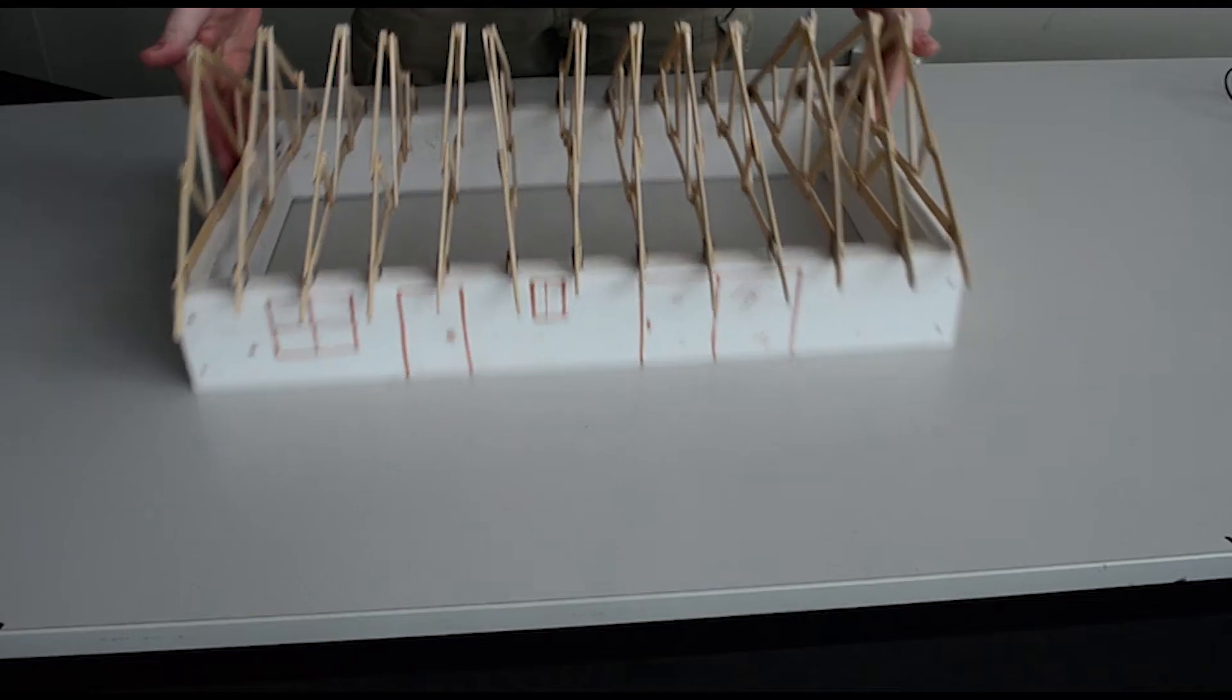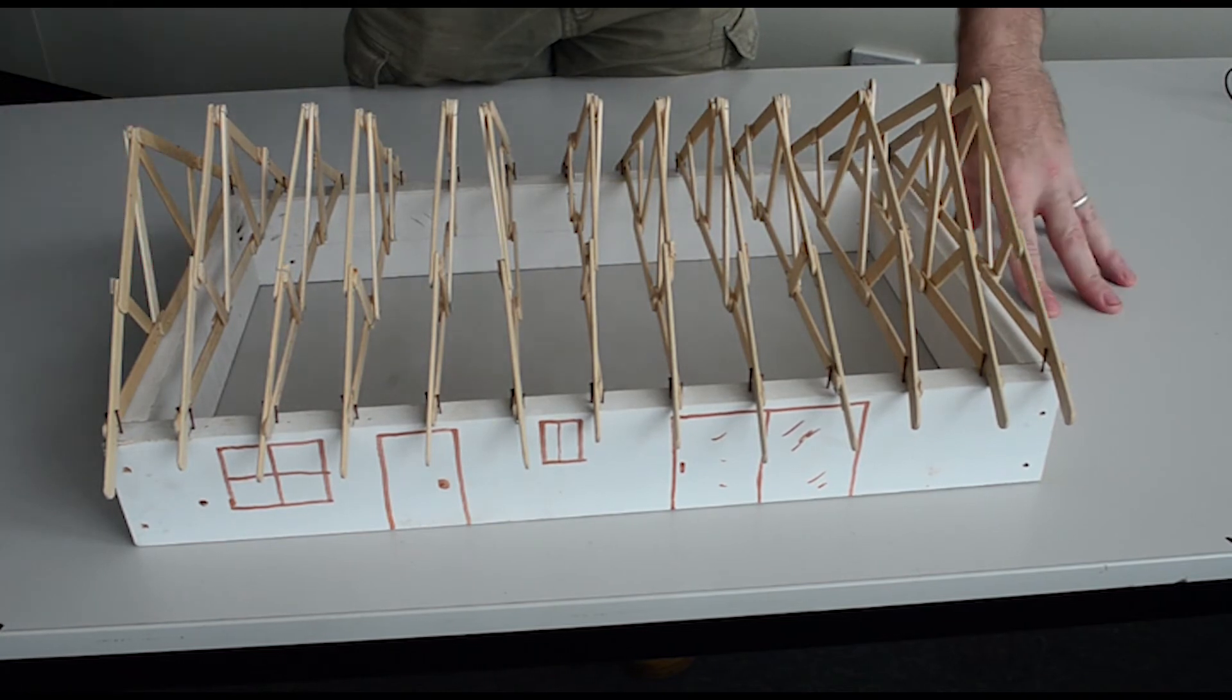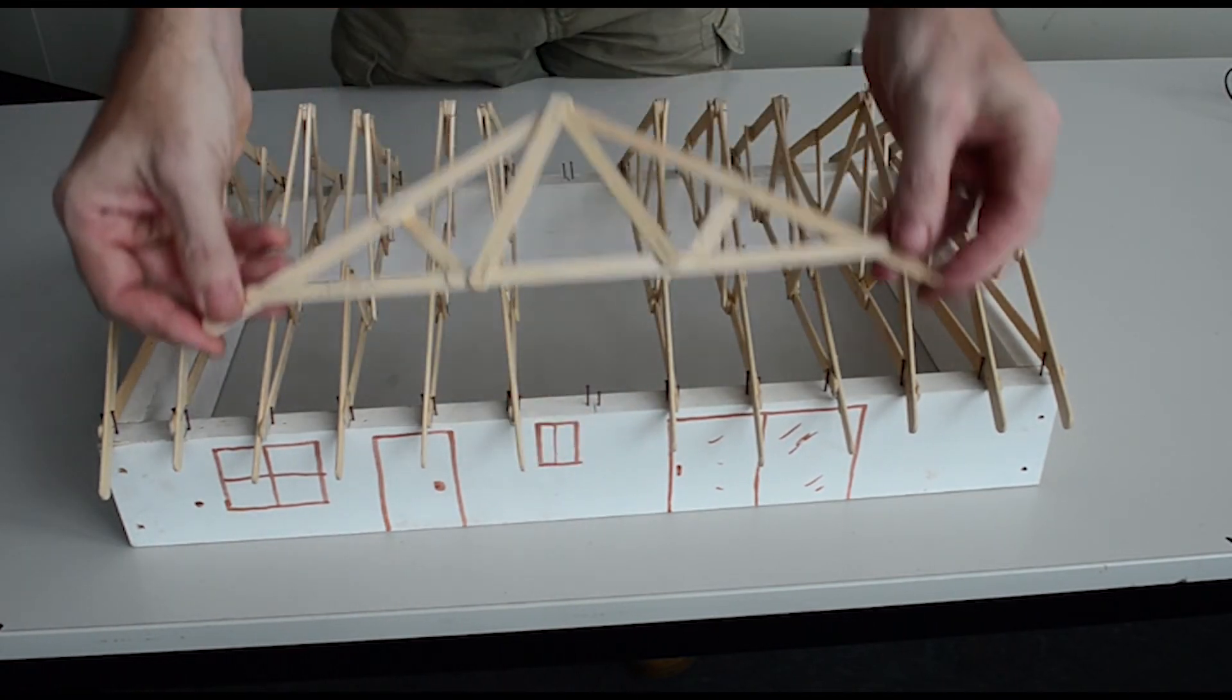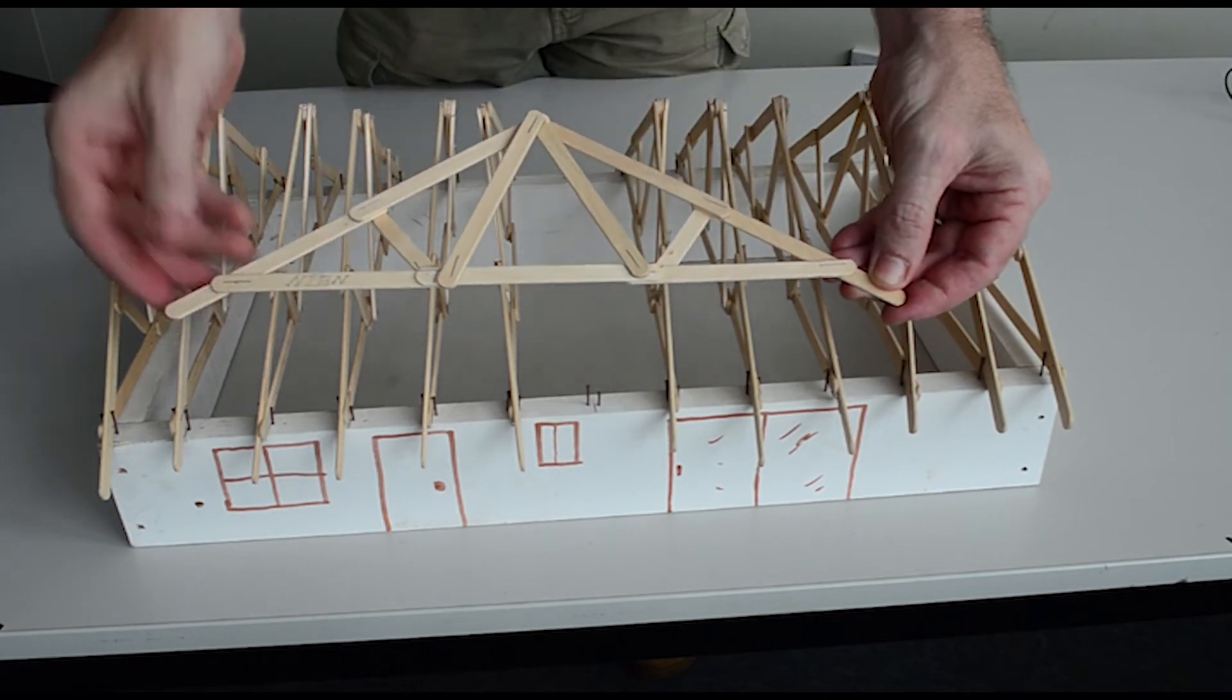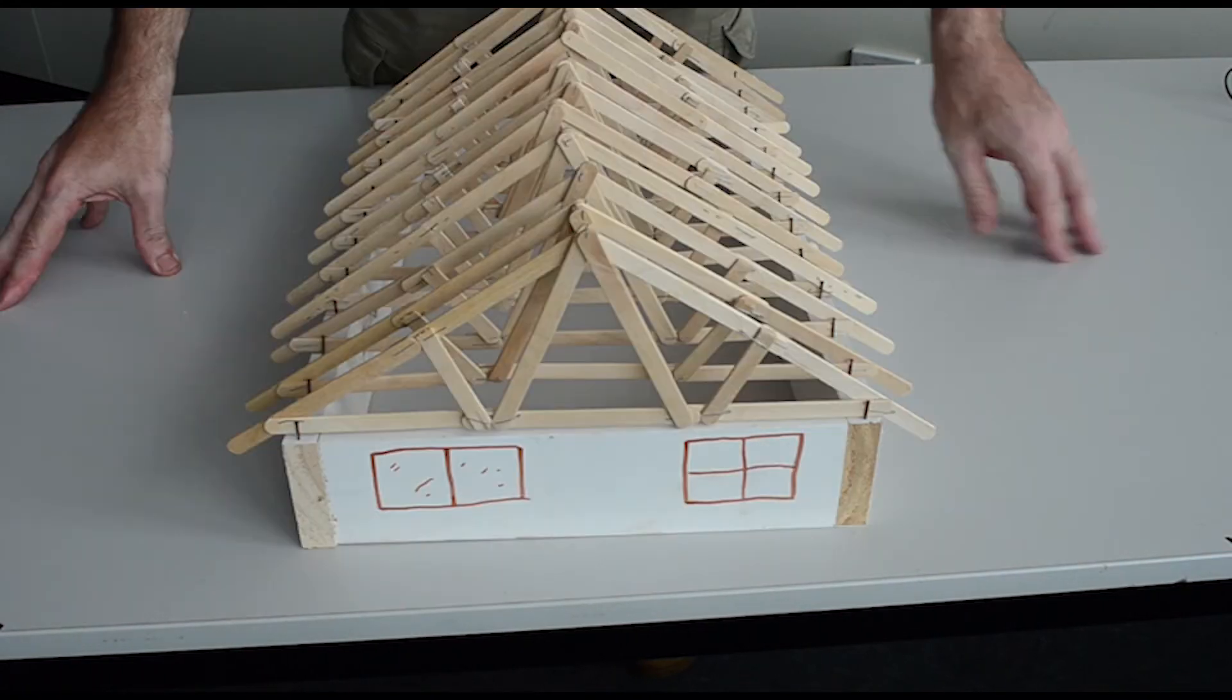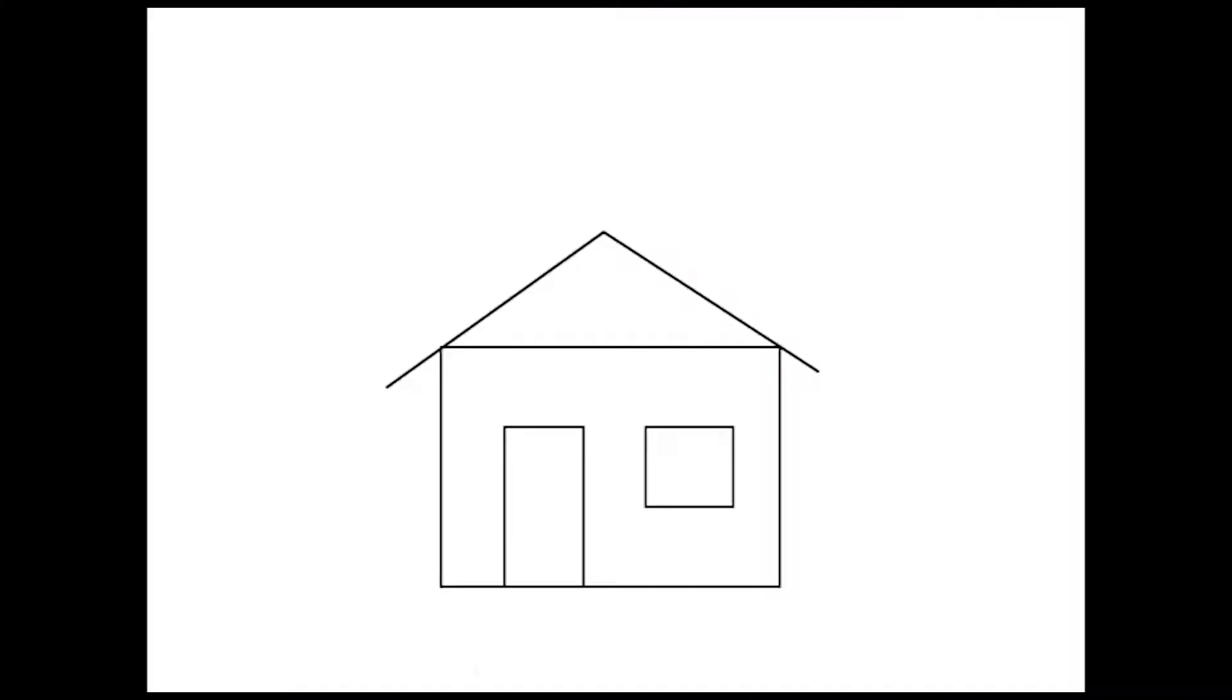Alright, so here we have a simple little house with a line of trusses going down the length. Now on any house there's a number of forces that act upon it—you have shear forces and racking forces—but the one we're going to look at today is what's known as an uplift load. That basically means when the wind blows on the house it is trying to pull that roof off, and I'm going to show you how that works.